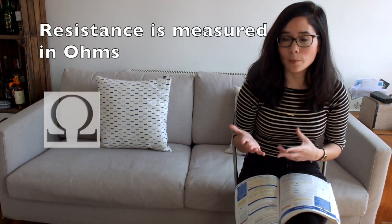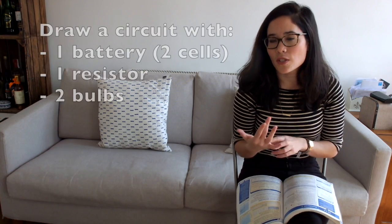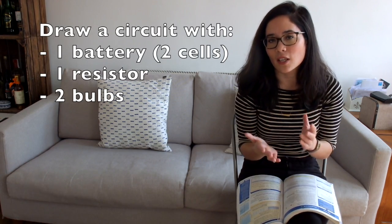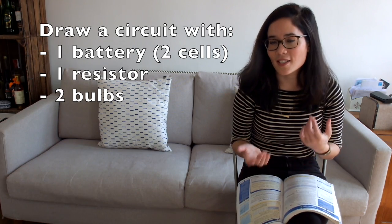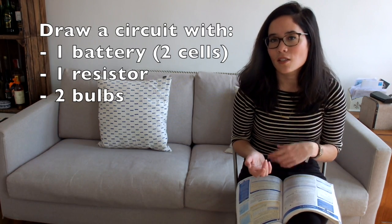Let's look more closely at the difference between a series and a parallel circuit. I'm looking for a circuit that contains two cells pushed together to form a battery, one resistor, and two light bulbs, and that's a series circuit. Have a go at drawing that out and see if it matches the one I've drawn here.